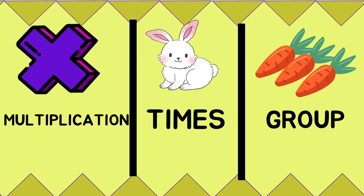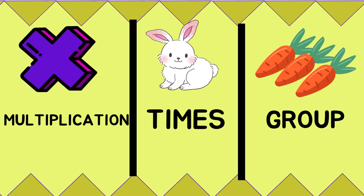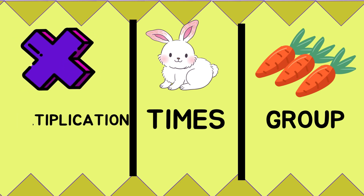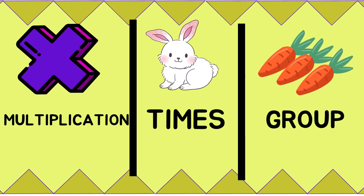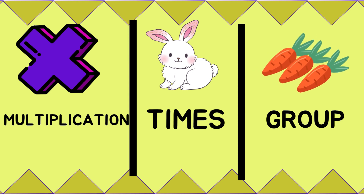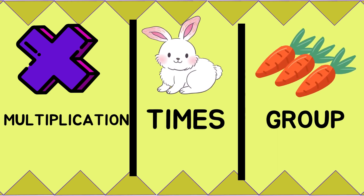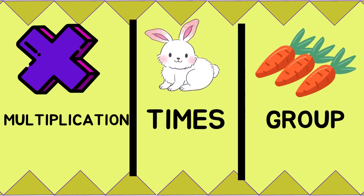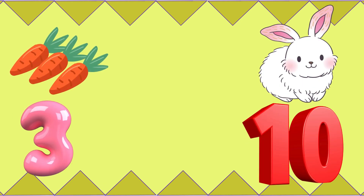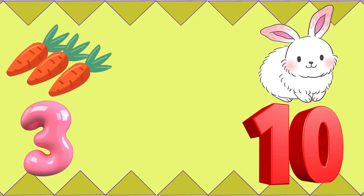What we just did is called multiplication. Multiplication happens when you add a group of objects repeatedly, a number of times. We added 3 carrots repeatedly, 10 times, because 10 rabbits each had 3 carrots.